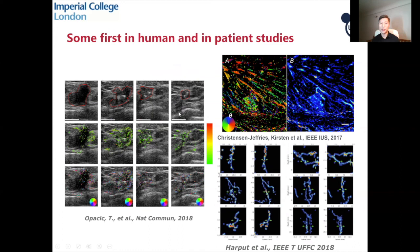Not only has this super-resolution technology been used in animals in vivo, it has also already been trialled in humans. These are some first human application examples: super-resolution imaging results reported on human testicular lesion, on human breast cancer patients, and on human lower limbs micro vasculature.